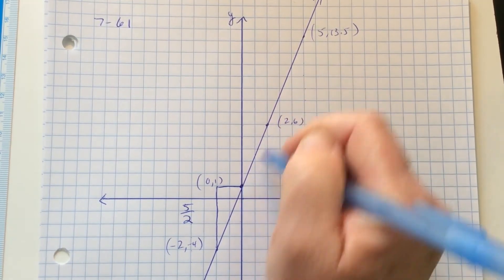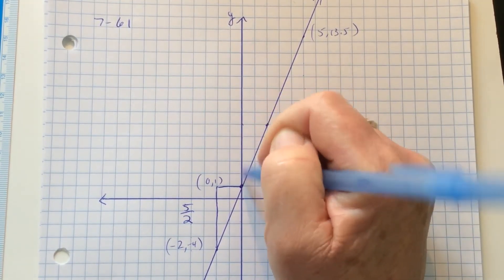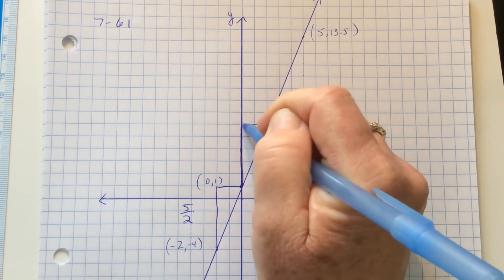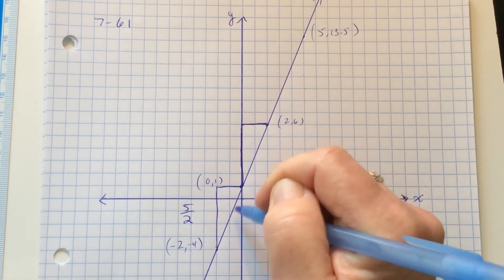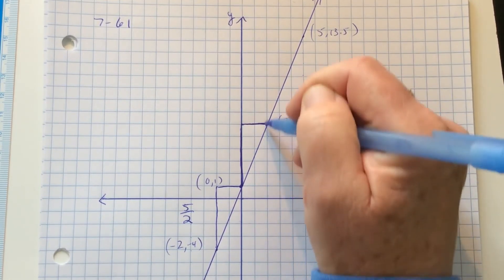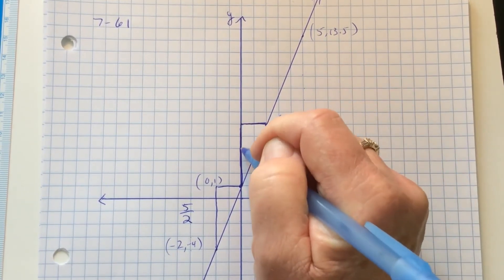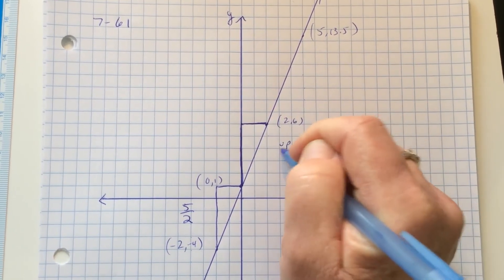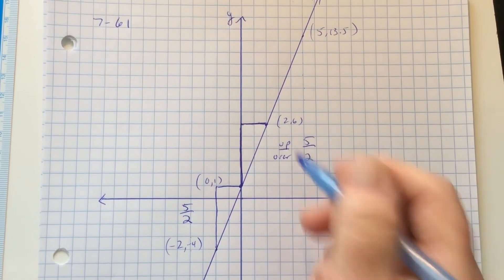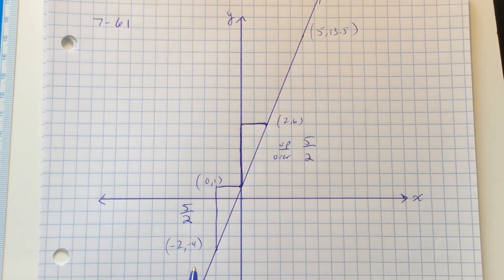I could use between these two points as well. Here is another slope triangle. It doesn't matter if you draw it above the line or below the line. Then the up is 5, and over is 2. That's also a slope of 5 over 2.